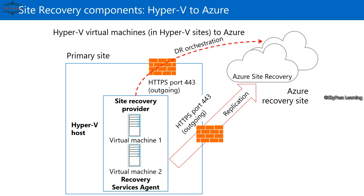In this Hyper-V to Azure scenario, the primary site is hosted on-premises running a Recovery Services agent, with virtual machines hosted there. You replicate those VMs to Azure, and whenever a failover is required — for example, if your on-premises data center goes down due to physical damage or a physical disaster — you can recover your VMs through Microsoft Azure.